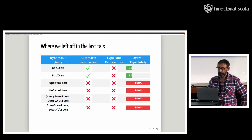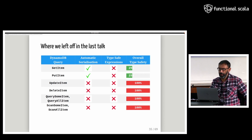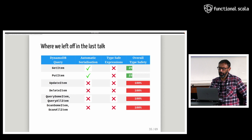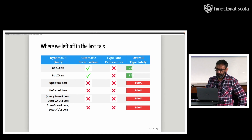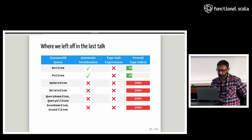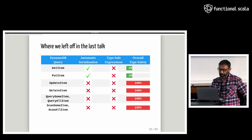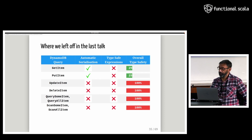This is a summary of where we left off in the last talk: only get and put queries use automatic serialization, and all queries do not have type-safe expressions. This is still a huge improvement over the SDK. However, we can see that there's still a lot of work left to do.